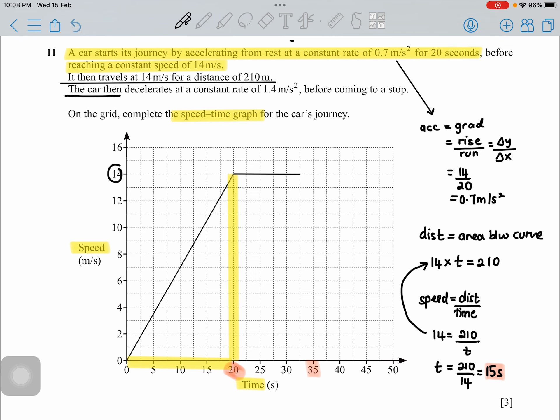Then the car decelerates at a constant rate of 1.4 before coming to a stop. What is the meaning of stopping? Your speed is returning back to 0. Deceleration is exactly slowing down, or you can say the value of acceleration is actually negative. I'm going to get acceleration as negative 1.4.